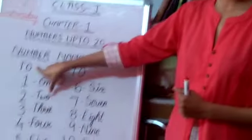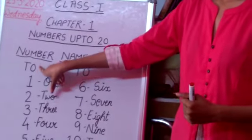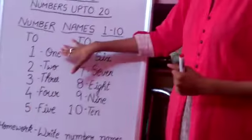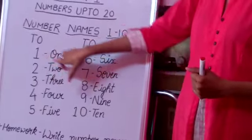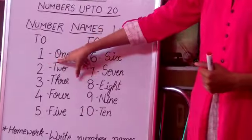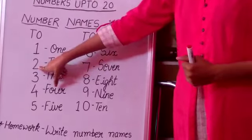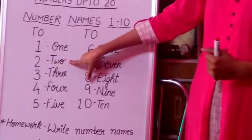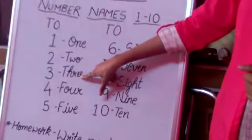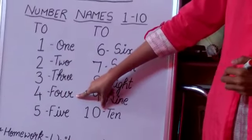So first we are addressing here T and O. Then under Ones we will write the numbers and side by side we will start writing the names. The first one is O-N-E, 1. T-W-O, 2. T-H-R-E-E, 3. F-O-U-R, 4.